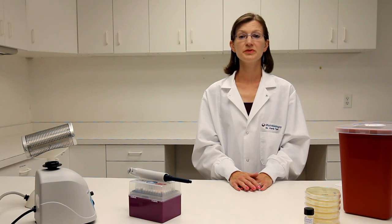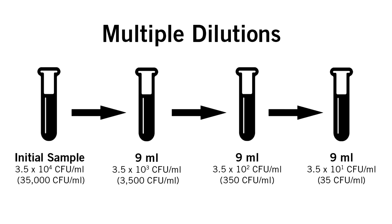We use multiple dilutions to decrease the sample concentration by multiple logs. Here is an example. If the concentration starts at 35,000 CFU per milliliter or 10 to the fourth and 35 CFU per milliliter is the target concentration, we would do three serial dilutions.